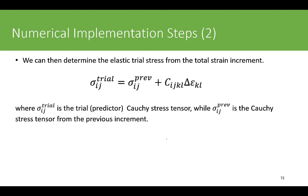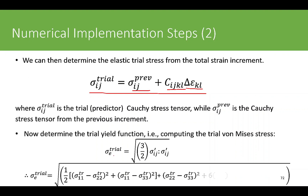We can determine the elastic trial stress using the relationship given before: we take the previous stress tensor value, multiply the elastic stiffness matrix — a fourth-order tensor stored as a six-by-six matrix — by the strain increment coming from the global solver or the current time increment. All definitions are in terms of Cauchy stress, and the superscript 'previous' refers to the previous time increment.